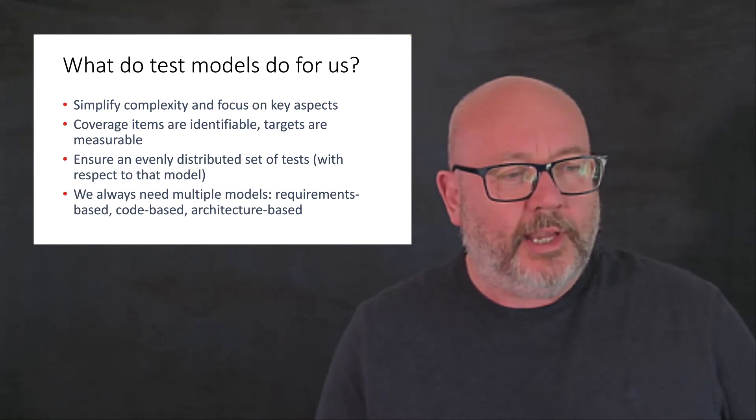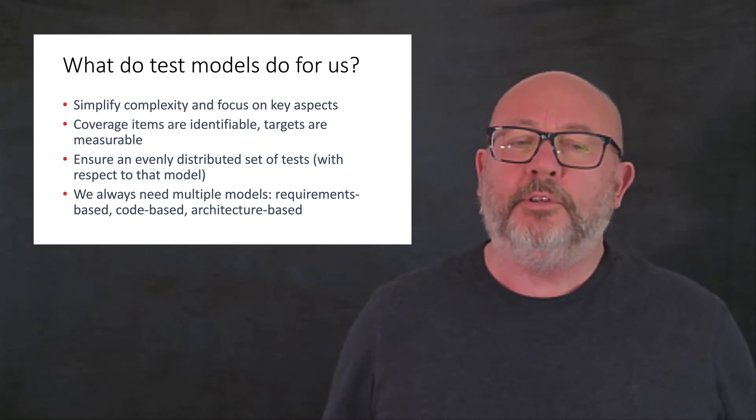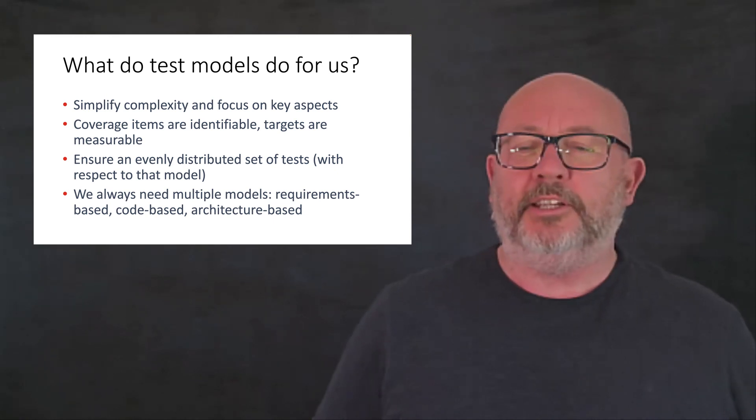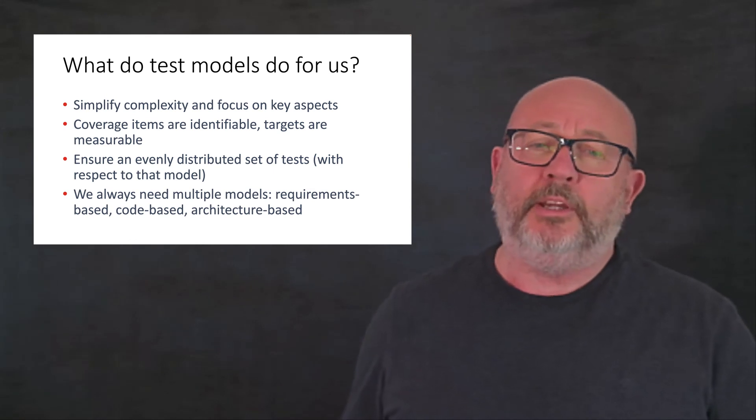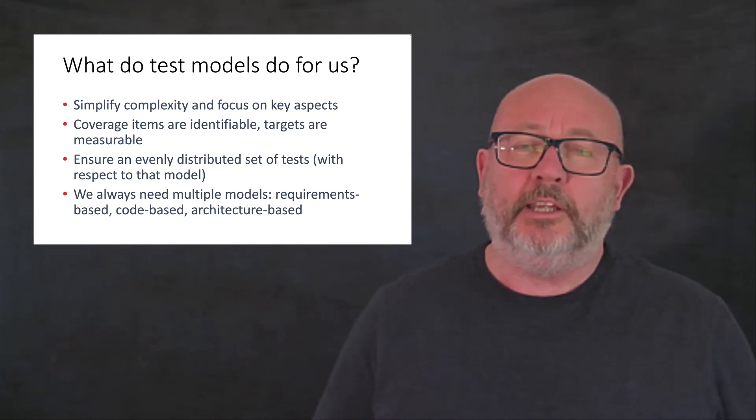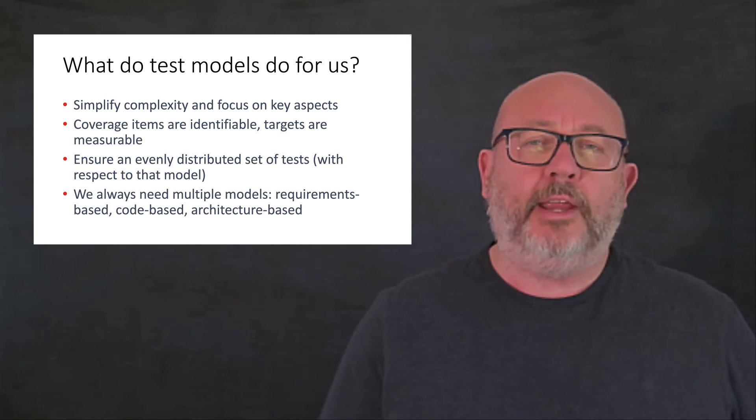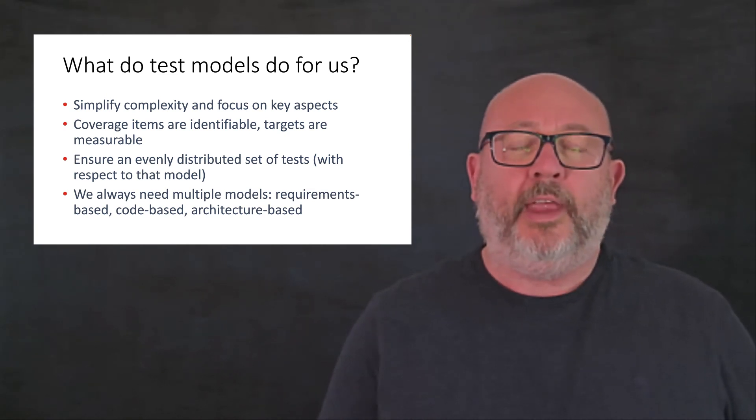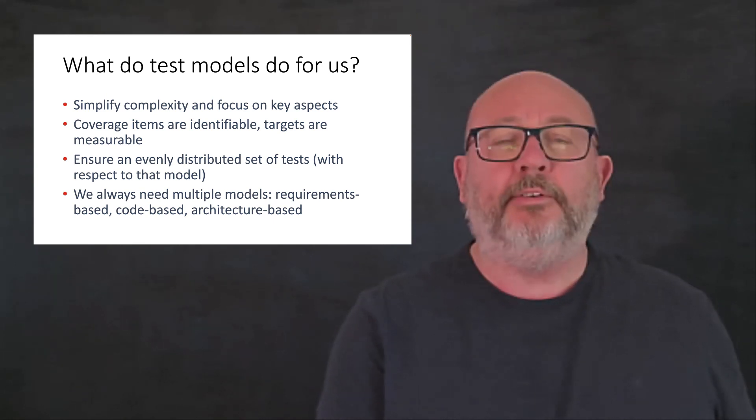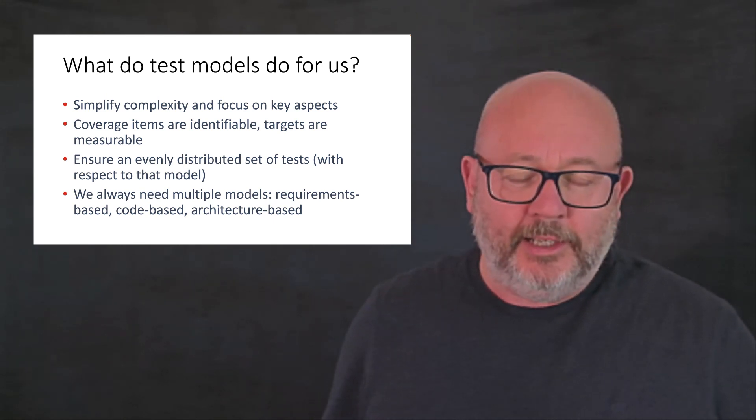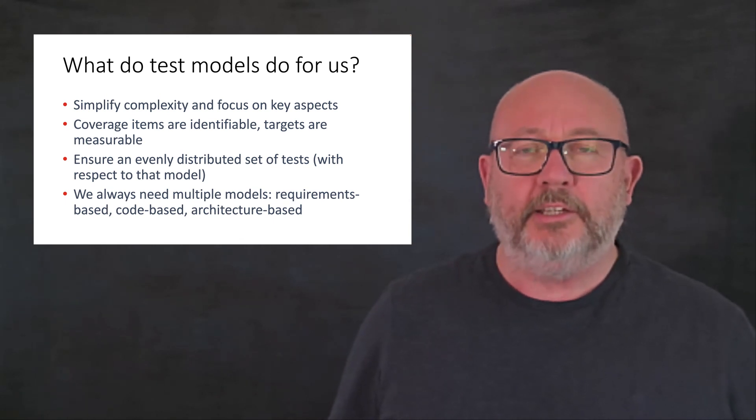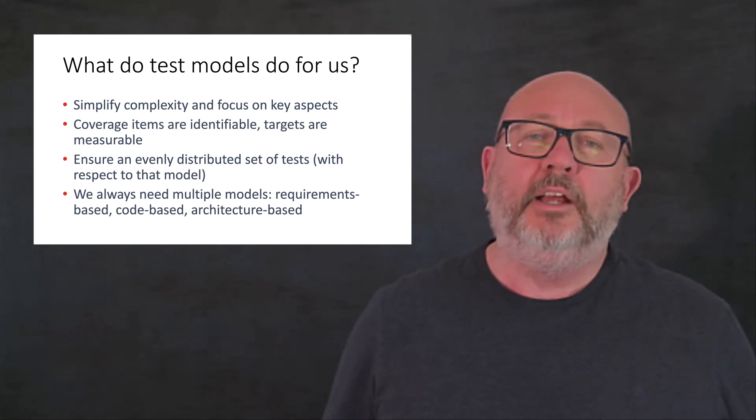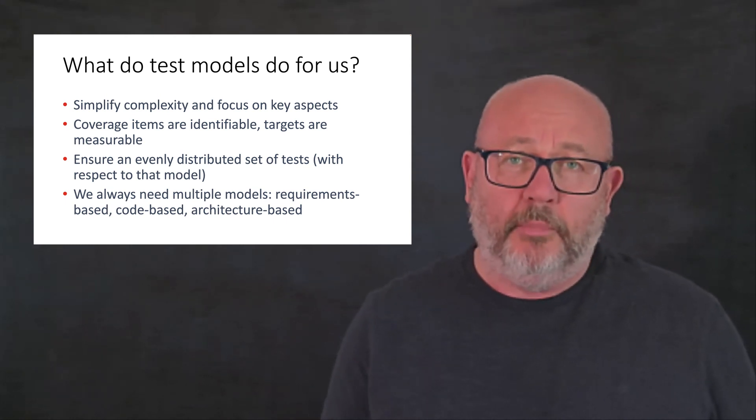Coverage items on models are identifiable and we can use them as measurable targets. What they also do, what these tests derive from a model also do, is they ensure usually an evenly distributed set of tests with respect to the models we use. And what that means is when we select a model and create tests, we can be reasonably confident that overall the areas of the model are tested evenly because we've used a very clearly identifiable coverage item to exercise in our tests. So we have an even spread of test activity across the system based on the model we've used.